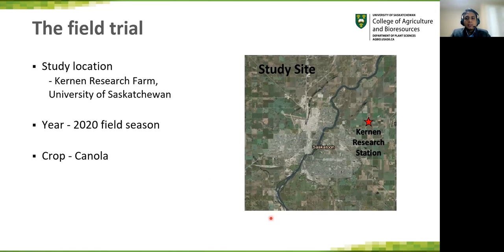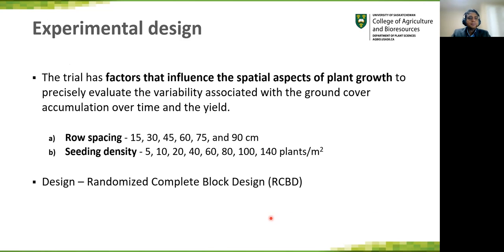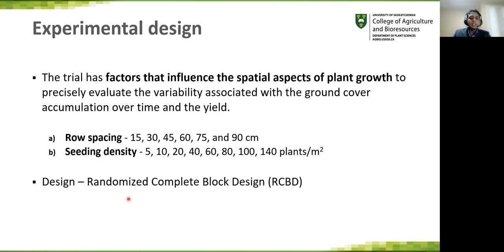We conducted our research at the Kernan Research Farm in the 2020 field season. The crop we used was canola. Our trial has factors that influence the spatial aspects of plant growth to precisely evaluate the variability associated with ground cover accumulation over time and the yield. Two main factors of the experiments are row spacing and seeding density. The row spacing has six levels ranging from 15 to 90 centimeters and the seeding density has eight levels ranging from 5 to 140 plants per square meter. The experimental layout is a randomized complete block design.